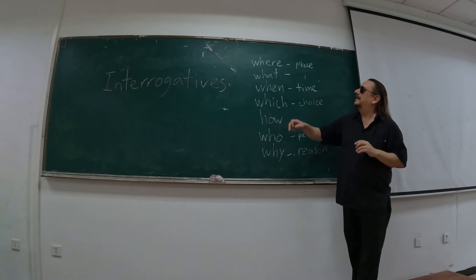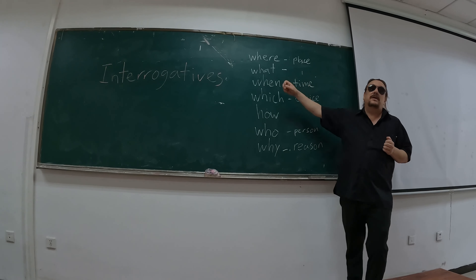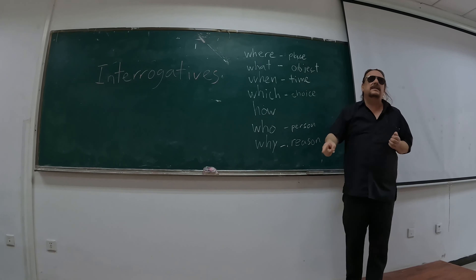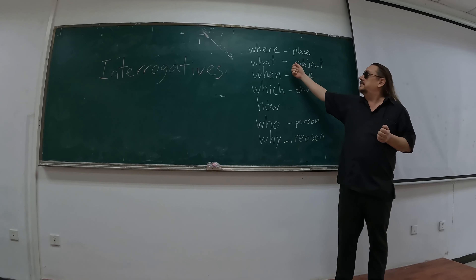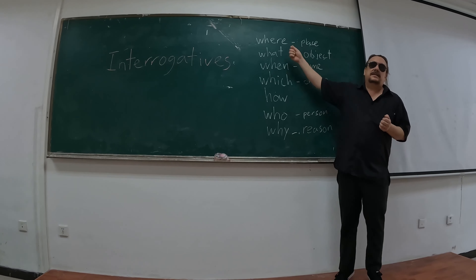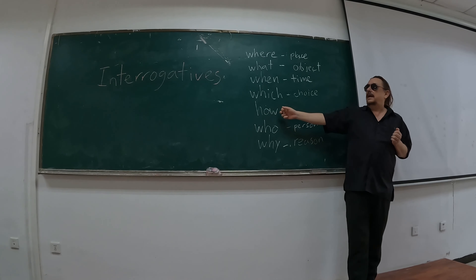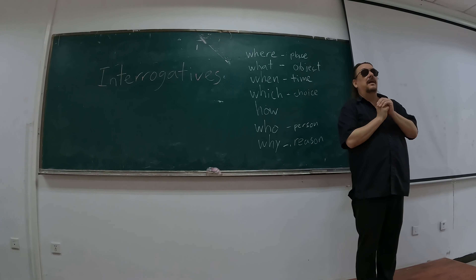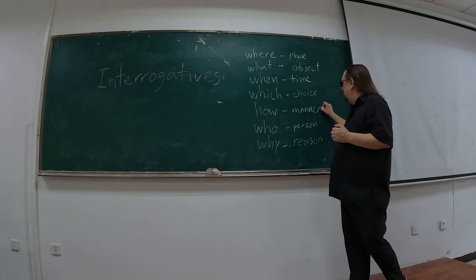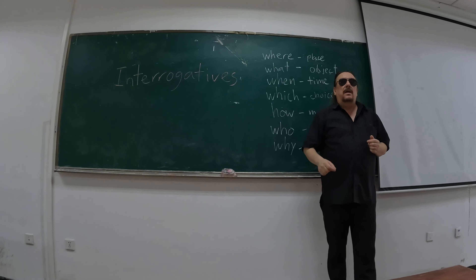Let's talk about these. When we ask where, what do we want to know? Place — location. When we ask when, what do we want to know? Time. Who? Person or people. Why? Reason. Which? Choice — which is a choice.